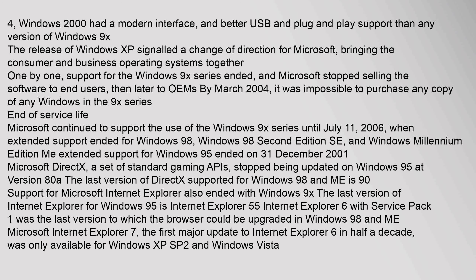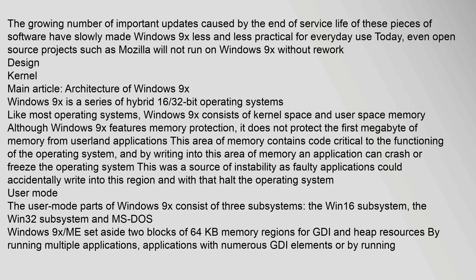Microsoft continued to support the use of the Windows 9x series until July 11, 2006, when extended support ended for Windows 98, Windows 98 2nd Edition SE, and Windows Millennium Edition ME. Extended support for Windows 95 ended on 31 December 2001. Microsoft DirectX stopped being updated on Windows 95 at version 8.0a; the last version of DirectX supported for Windows 98 and ME is 9.0. Support for Microsoft Internet Explorer also ended with Windows 9x: the last version for Windows 95 was Internet Explorer 5.5. Internet Explorer 6 with Service Pack 1 was the last version to which the browser could be upgraded in Windows 98 and ME. The growing number of important updates caused by the end of service life have slowly made Windows 9x less practical for everyday use, and even open source projects such as Mozilla will not run on Windows 9x without rework.